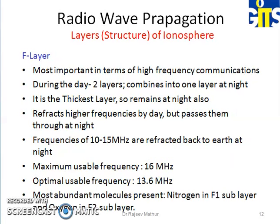Lastly, the F layer is the most important layer in terms of high frequency because it is present both day and night. During the day two sub-layers exist, and at night one layer remains — it is the thickest layer. It reflects higher frequencies by day but passes them through at night. Frequencies of 10 to 15 MHz are reflected back to earth at night. The maximum usable frequency is 16 MHz and the optimal usable frequency is 13.6 MHz. The most abundant molecules present are nitrogen and oxygen.